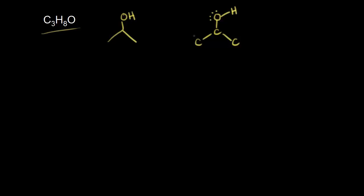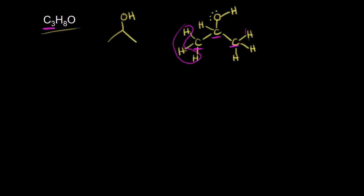How many hydrogens do we add to the carbon on the left? We need three hydrogens there. The carbon in the center already has three bonds, so it needs one more hydrogen. And the carbon on the right needs three hydrogens. Counting everything up: one, two, three carbons — that's C3. Three hydrogens here plus three here is six, plus one on the center carbon is seven, and don't forget the hydrogen on the oxygen for eight. So we have eight hydrogens and one oxygen. The molecular formula is C3H8O.